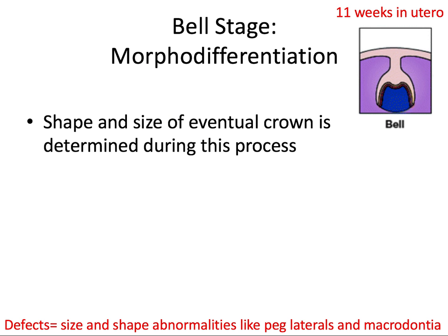The second phase is called morphodifferentiation — morpho meaning form, structure, shape — and this is where we determine the size and shape of the eventual tooth crown. This is also happening simultaneously with histodifferentiation, hence the same time period of 11 weeks in utero for the bell stage. Failure in a stage all about determining shape and size will have shape and size abnormalities like peg laterals, macrodontia, and a couple more we'll talk about in our next video.